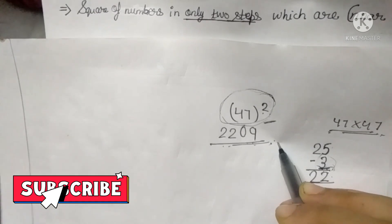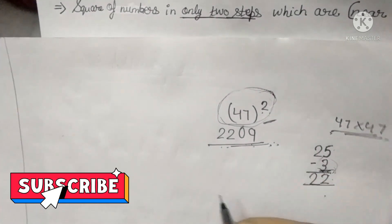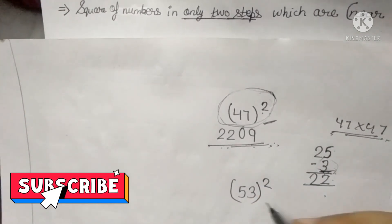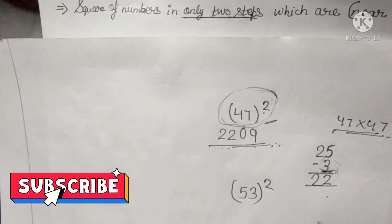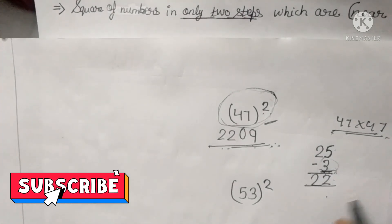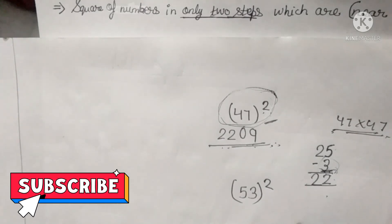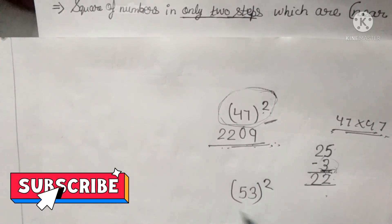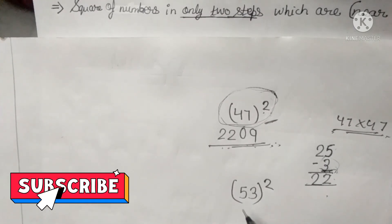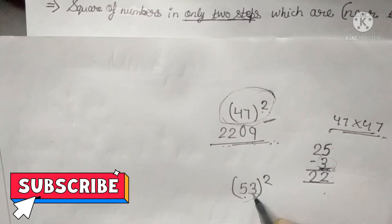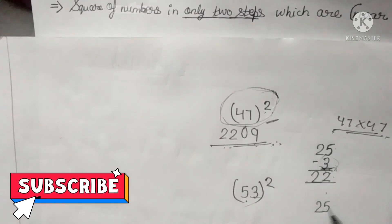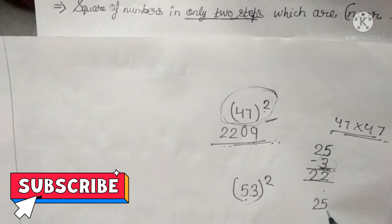Let's take one more example. Suppose we have to find the square of 53. Normally we would do 53 multiplied by 53. To avoid this, we do the same thing. First, we check how much more or less the number is than 50. 53 is 3 more than 50. The digit 25 will be the same in every case.